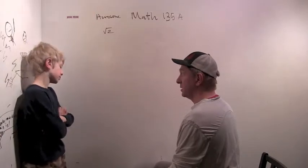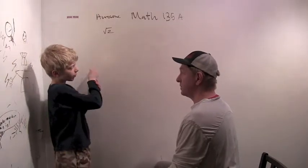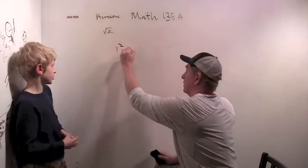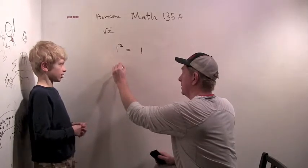Well, 1 times 1 is 1 and 2 times 2 is 4. It's between 1 and 2. So it can't be an integer.